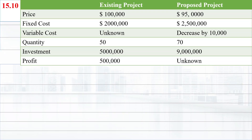We have to calculate the incremental profits. To calculate the incremental profits, we need to calculate the variable cost. We will find the variable cost from the existing product and apply this variable cost in the proposed product to find the profits. The formula is: profit equals revenue minus fixed cost minus variable cost times quantity.